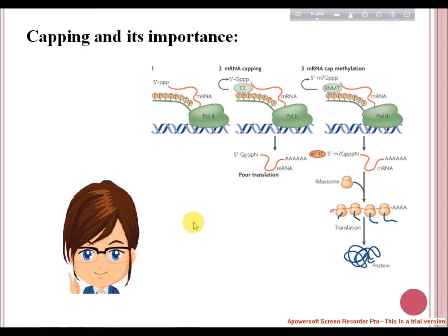During translation, the mRNA cap and poly-A tail bind to each other through a protein eIF-4G and the mRNA gets circularized.